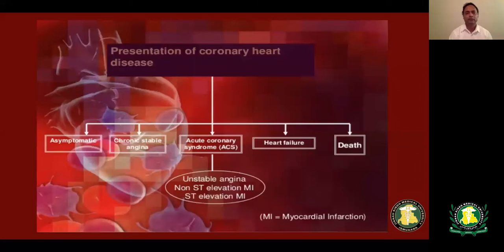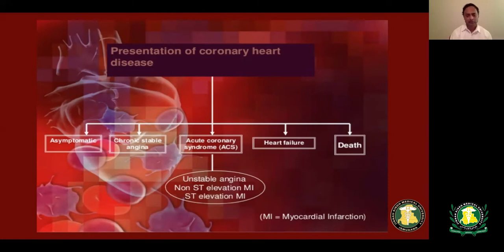These are some of the presentations of coronary heart disease. If the plaque buildup causing coronary stenosis is not significant, the patient usually remains asymptomatic. If the stenosis increases, the patient can develop chronic stable angina. If the cholesterol plaque erodes or ruptures, it can result in unstable coronary disease — what we call acute coronary syndrome. Sometimes the stenosis gradually increases, resulting in chronic low blood supply to the heart muscle, causing weakness of the heart muscle and cardiomyopathy, which can result in heart failure. Sometimes the plaque ruptures suddenly in one of the major vessels, causing a massive myocardial infarction and sudden death.